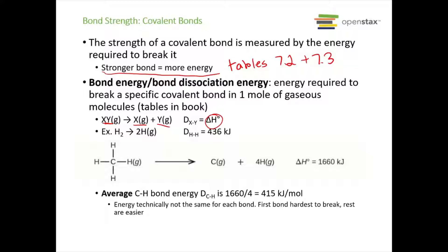For example, hydrogen H2 separating into two hydrogen atoms needs 436 kilojoules to break it apart. Another example is methane CH4 — to break it into carbon and four hydrogen atoms, it has an enthalpy of 1660 kilojoules. This is the average energy to break all four carbon-hydrogen bonds, so on average it's about 415 kilojoules per mole per bond. But the energy is not the same for each bond — it actually takes the most energy to break the first bond, and then it's easier to break the rest. The first bond is the highest energy and the other three start going down.